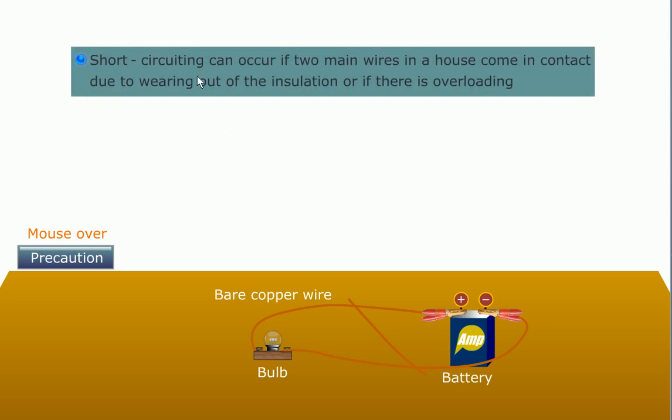Short-circuiting can occur if two main wires in a house come in contact due to wearing out of the insulation or if there is overloading.